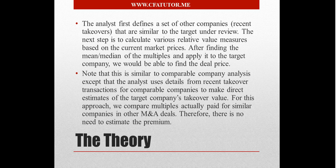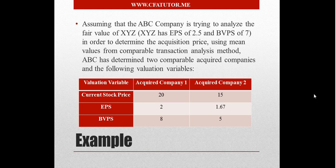If we take a look at the example here, the ABC company is trying to analyze the fair value of XYZ — ABC is the acquirer and XYZ is the target, which has an EPS of 2.5 and book value per share of 7. To determine the acquisition price, they use the mean values from the comparable transaction analysis method. The analyst determines that there are two recent takeover transactions for two companies with the following valuation variables: EPS and book value per share.